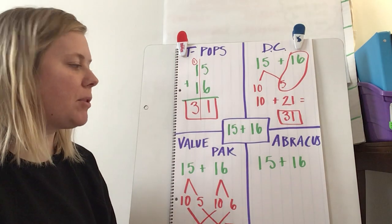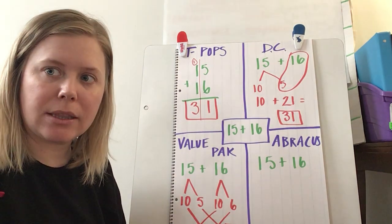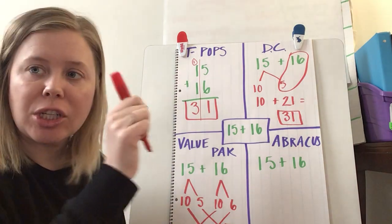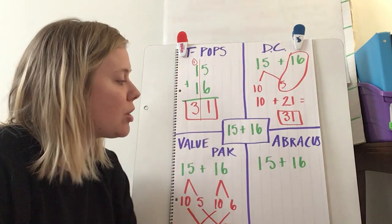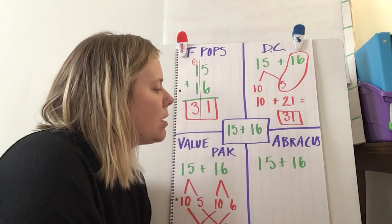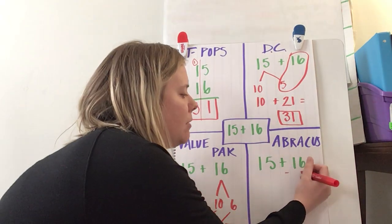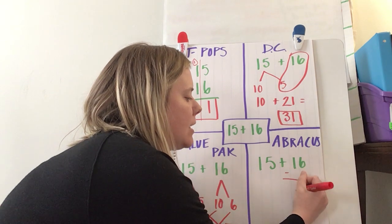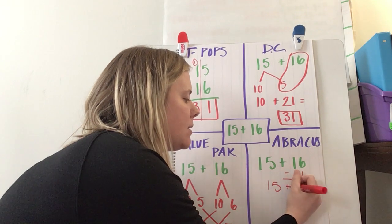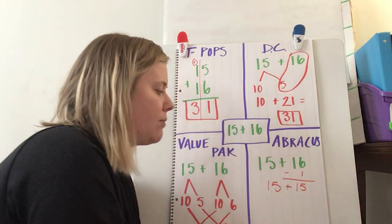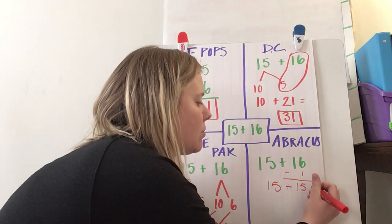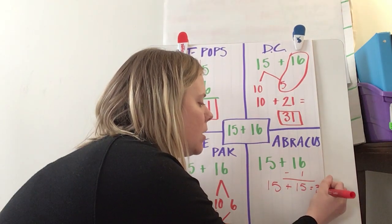Okay, now we have Abrakes, which zaps the numbers to get them to a friendly number, and then they change it back at the end. He's the magician. He zaps his numbers. He's able to change them. So for this one, 15 and 16, well, if I take one away from 16, I have 15 plus 15, right? So I'm going to zap 16 and change it into 15 because I know my doubles. I know 15 plus 15 equals 30, right?